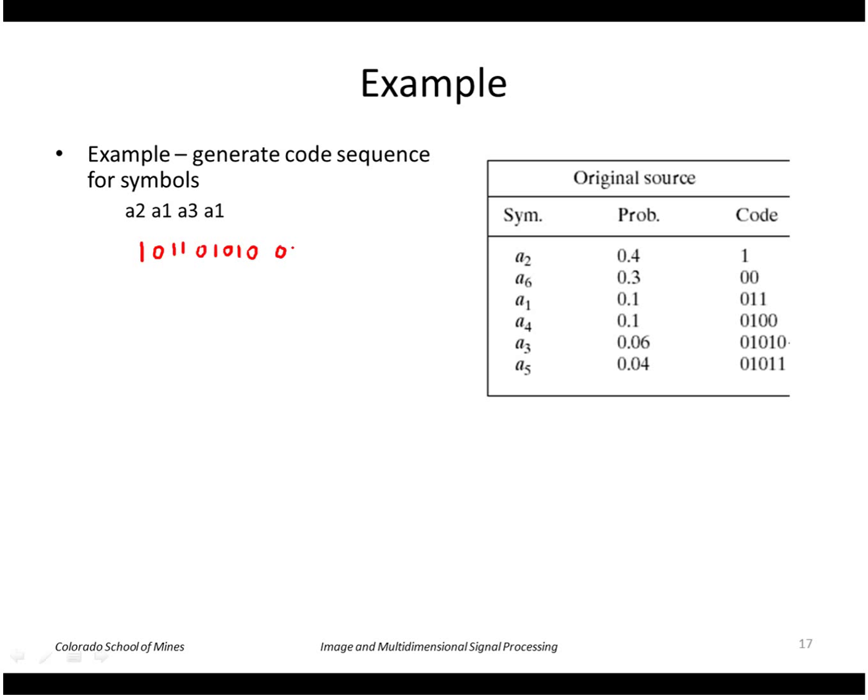If we have an input sequence like this and want to decode it, we just look at the table from left to right. The code 0 1 0 1 0, that's the first group of bits, is a3.